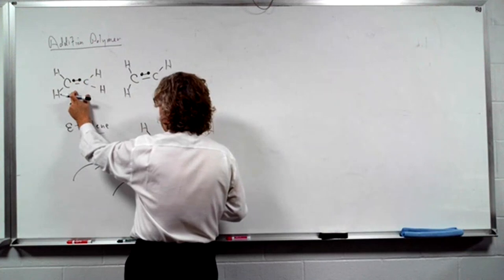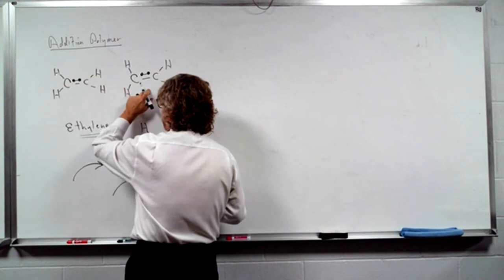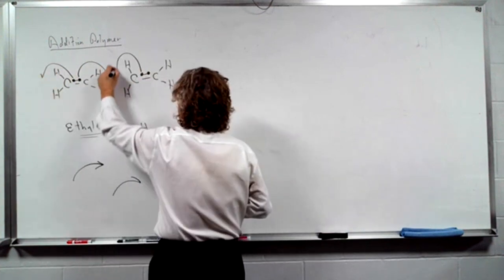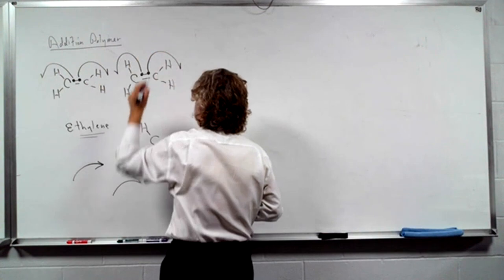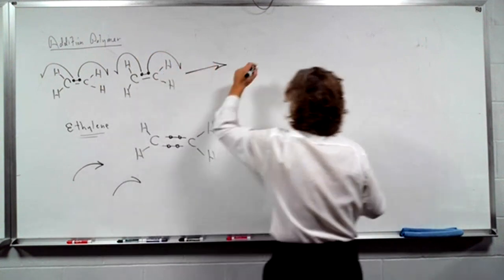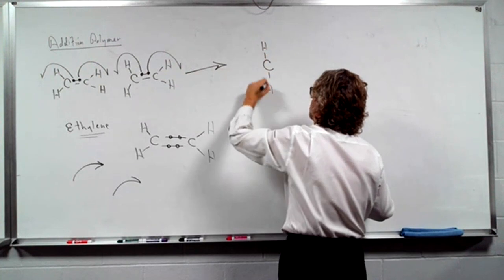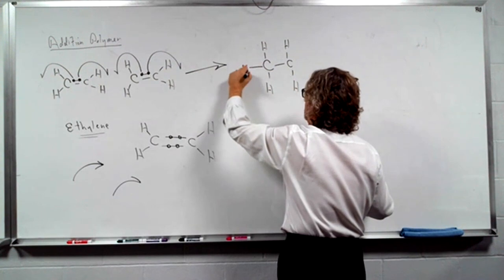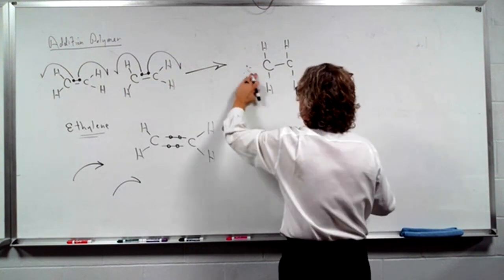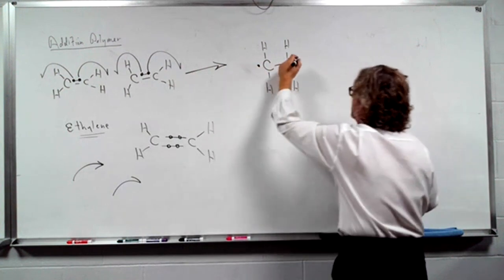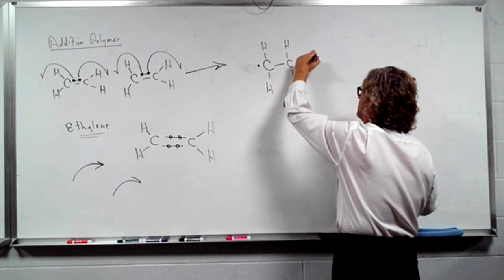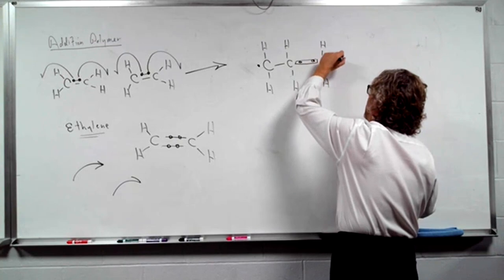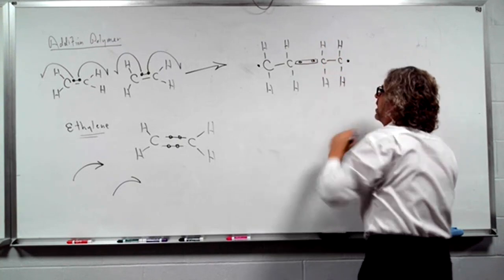Here's another ethylene. Let me draw the electrons in there. In chemistry, if we have a double-headed arrow, that means two electrons are flying someplace. If we have a single-headed arrow, like a fish hook, that means one electron is flying someplace.